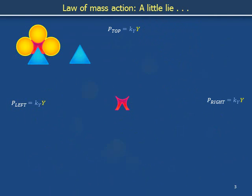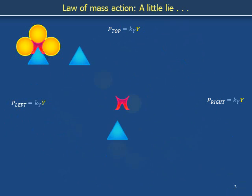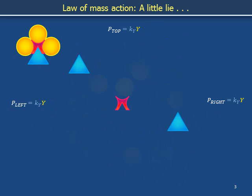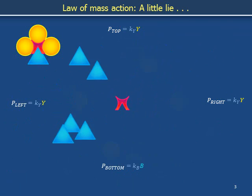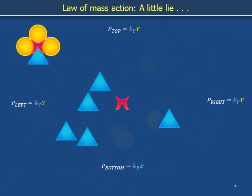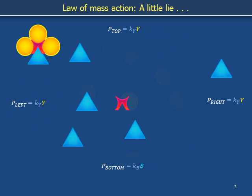The triangular socket is similar. A lone triangle will occasionally occupy the triangular groove. A second triangle doubles the fraction of time that this groove is occupied. The fraction of time that the bottom triangular groove is occupied is equal to a proportionality coefficient k sub b multiplied against the concentration of b — meaning the concentration of blue triangles.